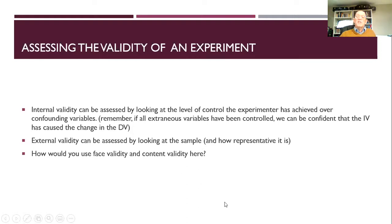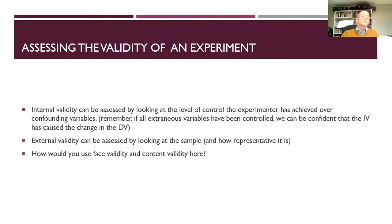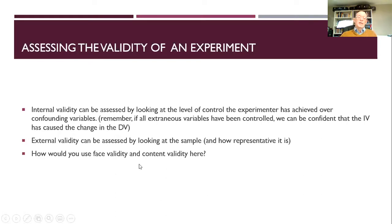When assessing the validity of an experiment, for internal validity we could look at how much control the experimenter achieved over confounding variables. If it's a very well-controlled experiment, we can be confident the IV caused the change in the DV and therefore it has internal validity. For external validity, we look at the sample and how representative it is, then decide whether findings can be generalized. Think about how you would use face validity and content validity to assess an experiment — you can pause the video to consider that.